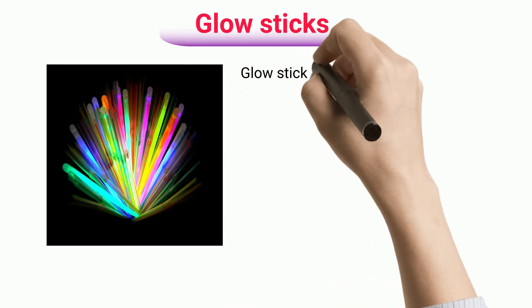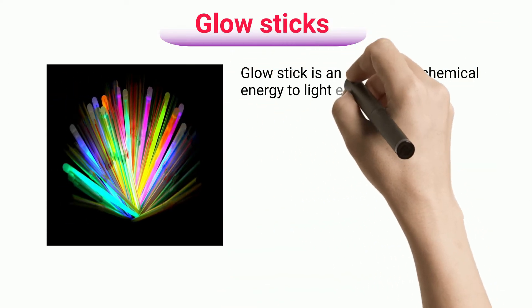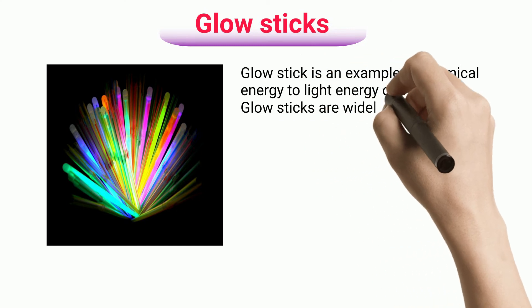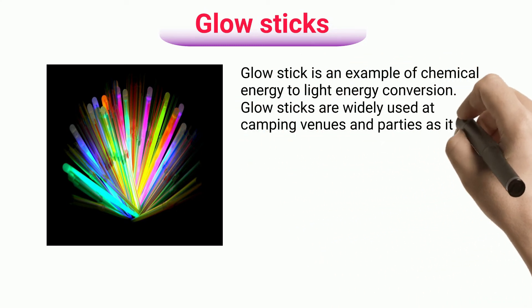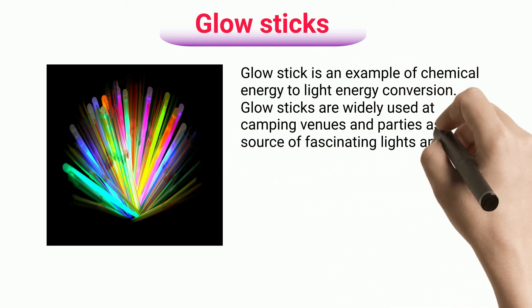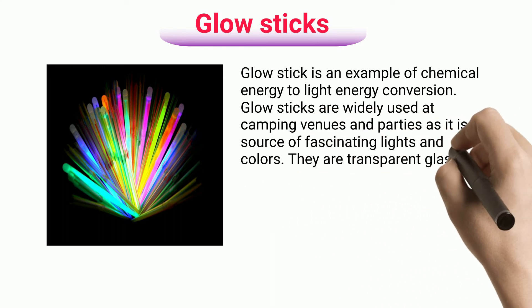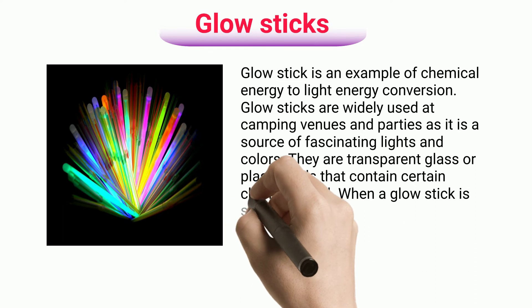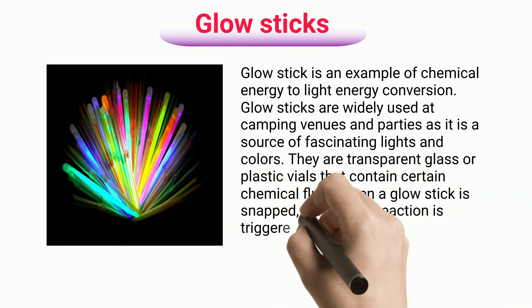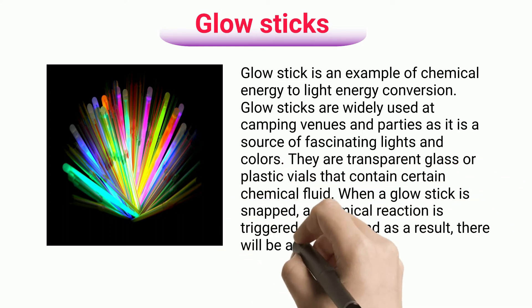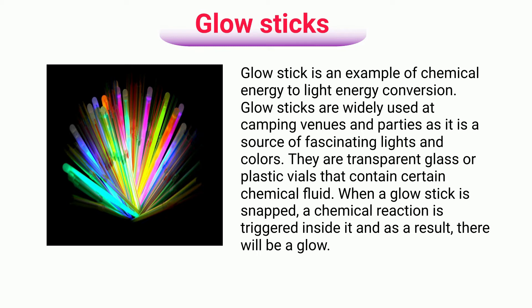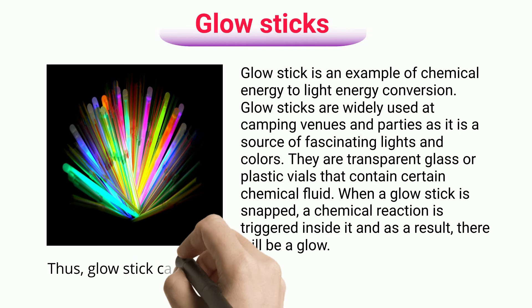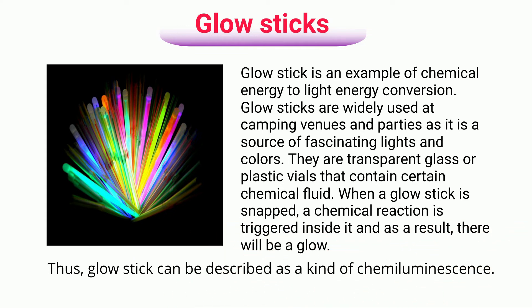Glowsticks. A glowstick is an example of chemical energy to light energy conversion. Glowsticks are widely used at camping venues and parties as they are a source of fascinating lights and colors. They are transparent glass or plastic vials that contain certain chemical fluid. When a glowstick is snapped, a chemical reaction is triggered inside it and as a result, there will be a glow. Thus, a glowstick can be described as a kind of chemiluminescence.